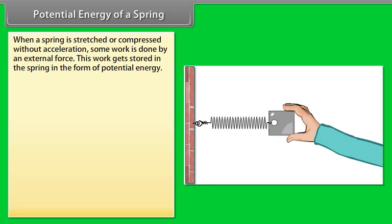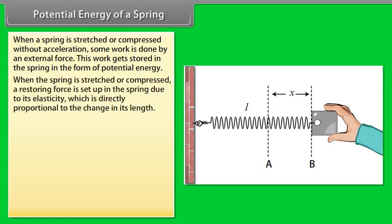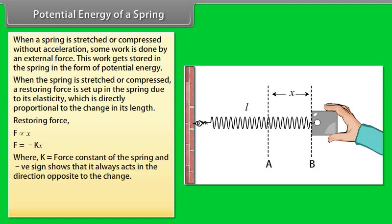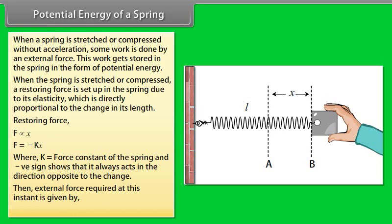Potential energy of a spring. When a spring is stretched or compressed without acceleration, some work is done by an external force. This work gets stored in the spring in the form of potential energy. When the spring is stretched or compressed, a restoring force is set up in the spring due to its elasticity, which is directly proportional to the change in its length. Restoring force is given by F is directly proportional to x, F equals minus kx, where k equals force constant of the spring, and negative sign shows that it always acts in the direction opposite to the change. Then external force required at this instant is given by F equals kx.